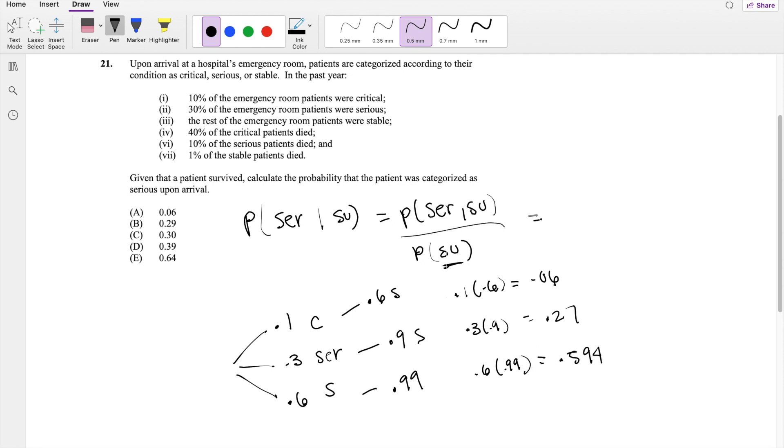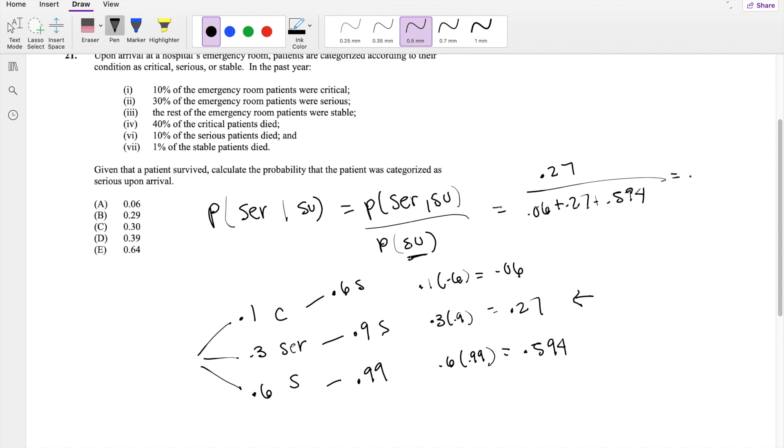So the probability that they are serious and survived, well, that's this one right here, 0.27. And what is the probability that they survived? That's just adding all these numbers together. 0.06 plus 0.27 plus 0.594. So this is equal to 0.924. And the numerator stays the same, which is approximately equal to 0.2922, which is also approximately equal to 0.29, our answer B.